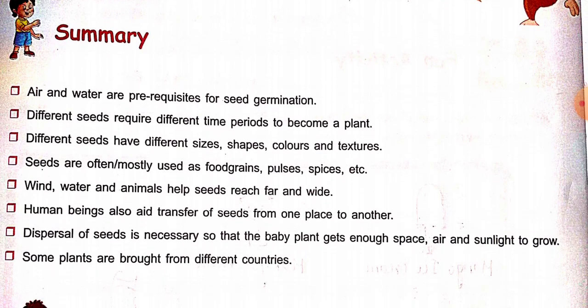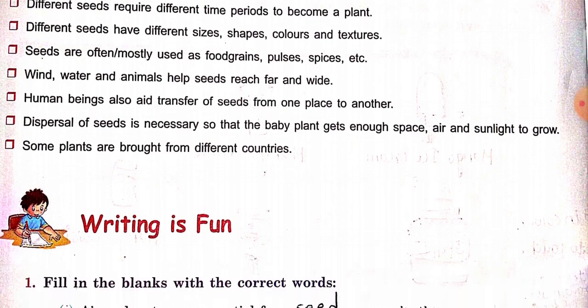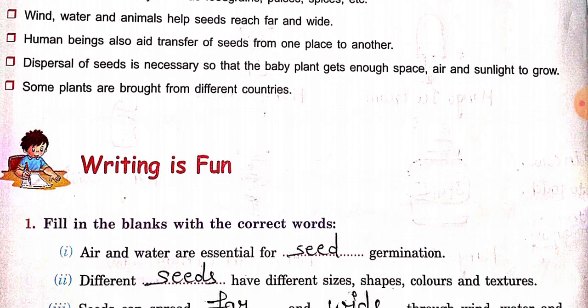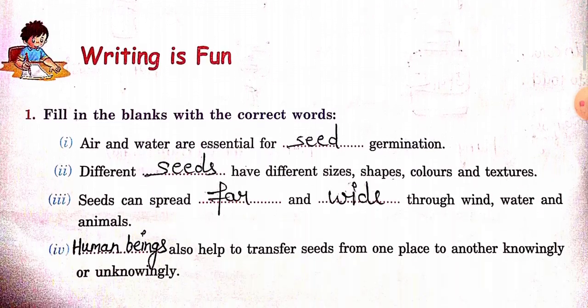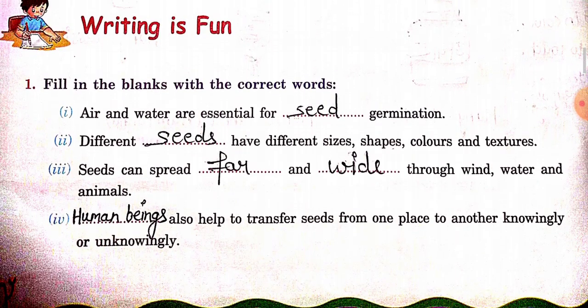Here is the summary. You can read the summary first and then writing is fun. The first question is fill in the blanks with the correct words. First: air and water are essential for seed germination.